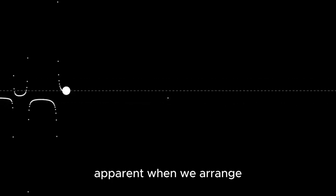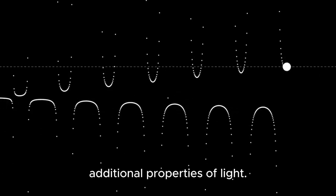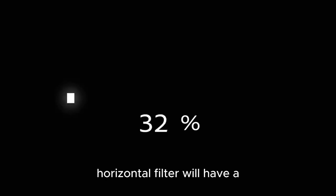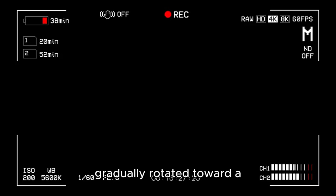Superposition becomes apparent when we arrange more than one filter in different ways to tease out additional properties of light. Light that passes through a horizontal filter will have a 100% chance of passing through a second horizontal filter. If the second filter is gradually rotated toward a vertical orientation, the chance of the light passing through both filters steadily decreases.